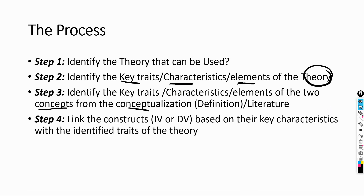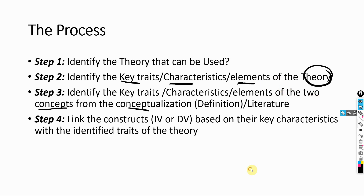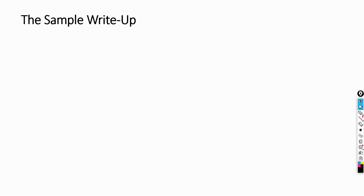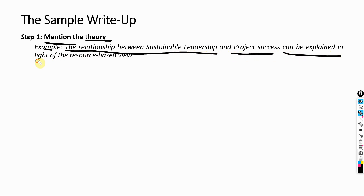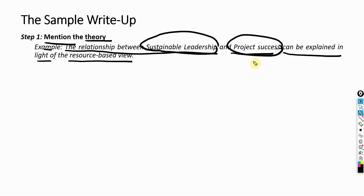The next step: link the constructs — your independent variable or dependent variable — based on the key characteristics and identified traits of the theory. Here is a sample write-up based on the steps identified earlier. Step 1 of the write-up: mention the theory. When you are trying to explain the relationship between variables, you start by mentioning the theory you are going to use. In this case, the example is: the relationship between sustainable leadership and project success can be explained in light of the Resource-Based View.